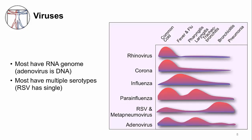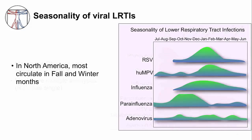Another difference between respiratory viruses is that they cause illness in different seasons. Adenovirus is constant and doesn't have seasonality. Parainfluenza peaks in the late fall, but RSV mostly occurs in the winter. The seasonality suggests that there are virus-specific and immunologic-specific reasons for these differences. Several of them peak in the winter, and we get more respiratory infections in the winter, which may be due to a more crowded environment allowing the virus to transmit easily from person to person.